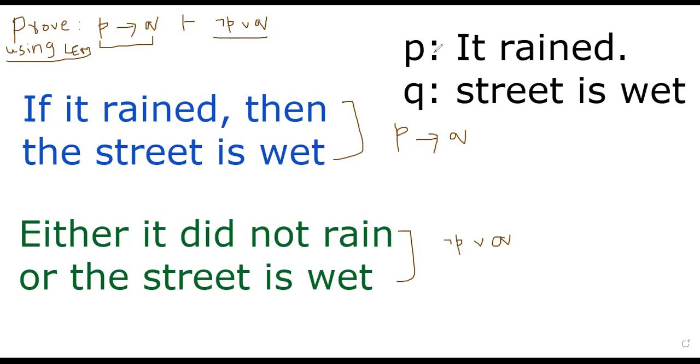Let's take for example P to be it rained, Q to be street is wet. If you compare these two statements, if it rained, then the street is wet versus either it didn't rain or the street is wet. Logically speaking, they are the same, but we will have to prove that these two things are equal.